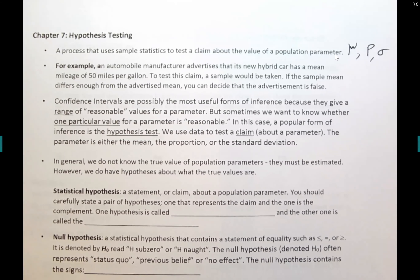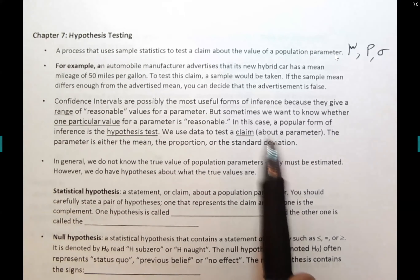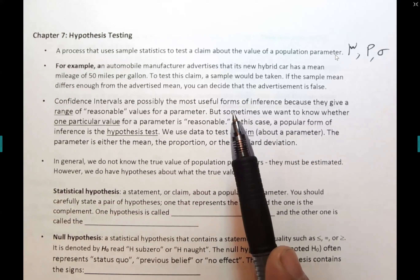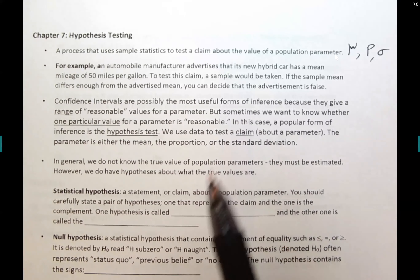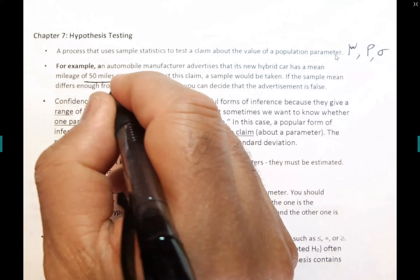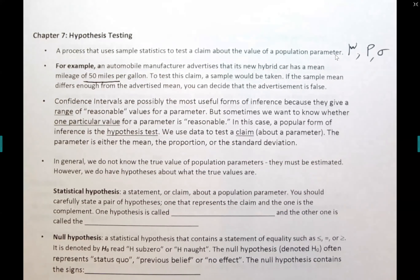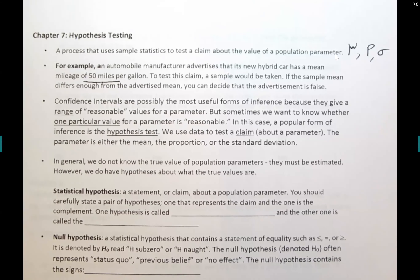We don't know what the population proportion or population mean is in general, but we can test them — we can make claims about them and validate or not validate those claims. Here is an example: an automobile manufacturer advertises that its new hybrid car has a mean mileage of 50 miles per gallon. You want to test this claim, so you collect a sample of information from 15 cars of the same make and model to see what the mileage per gallon is.